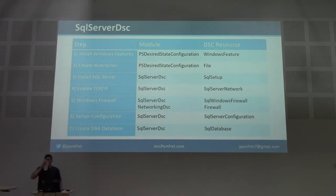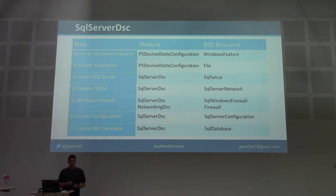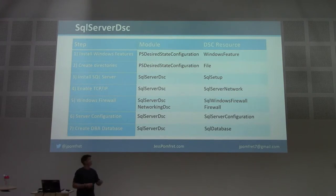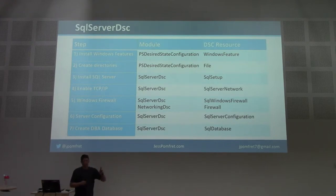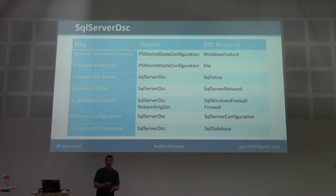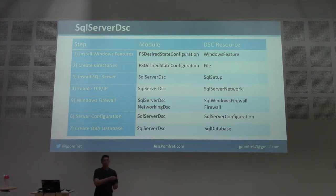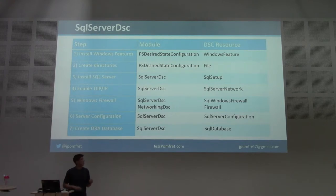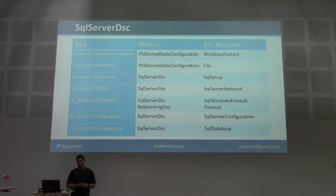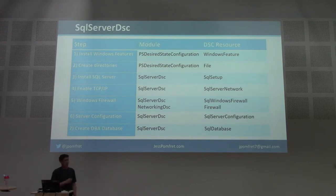I'm taking this checklist and translating it into DSC resources. For the .NET Framework piece I can use the built-in WindowsFeature resource. For directories I can use the built-in File resource. Then the SQL Server DSC module handles the more SQL Server-specific stuff — installing SQL Server, TCP/IP, firewall. For the firewall there are two options: the SQL Server DSC module has a resource specifically for opening the SQL Server firewall port, or you can use the NetworkingDsc module's firewall resource for more control. Finally, SqlServerConfiguration and SqlDatabase handle the rest.